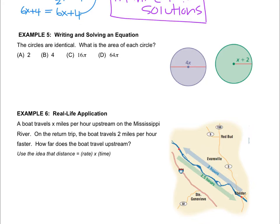It tells us that the two circles are identical and they want to know the area. We're going to pause for a second and think: what is the formula for area of a circle? The formula is pi r squared—pi times radius squared. Remember, to square something means to multiply it by itself.